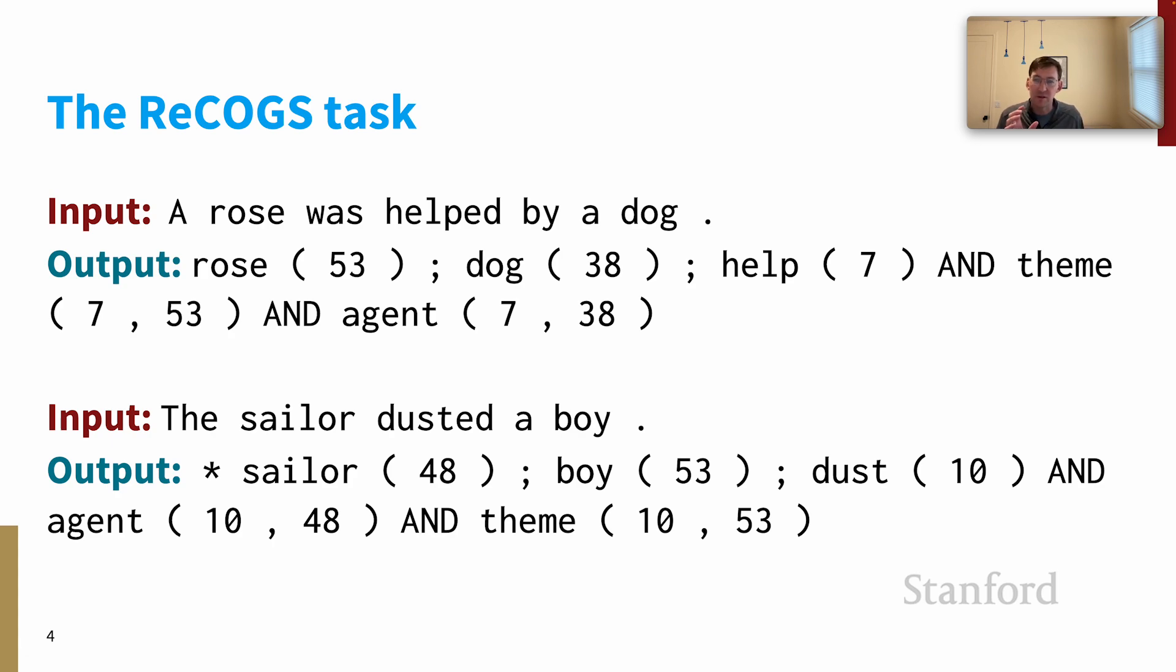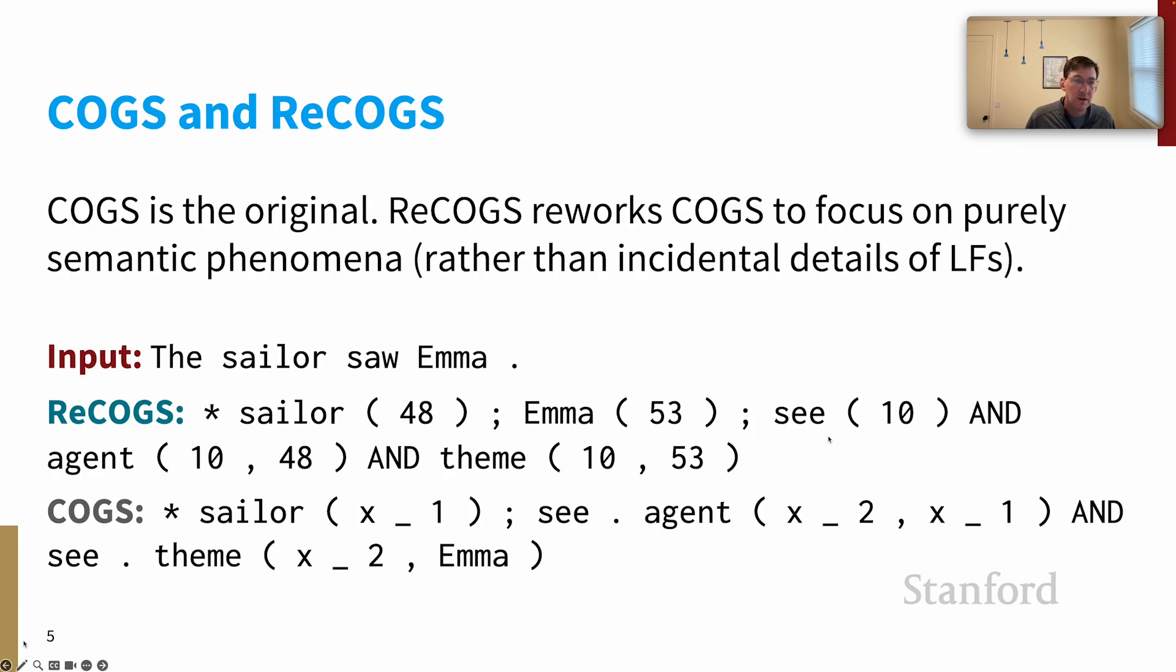You can probably see that the COGS and ReCOGS sentences tend to be somewhat unusual. This is a synthetic benchmark. They were automatically generated from a context-free grammar and so their actual meanings are sort of unusual. But that's not really the focus of either of these benchmarks.